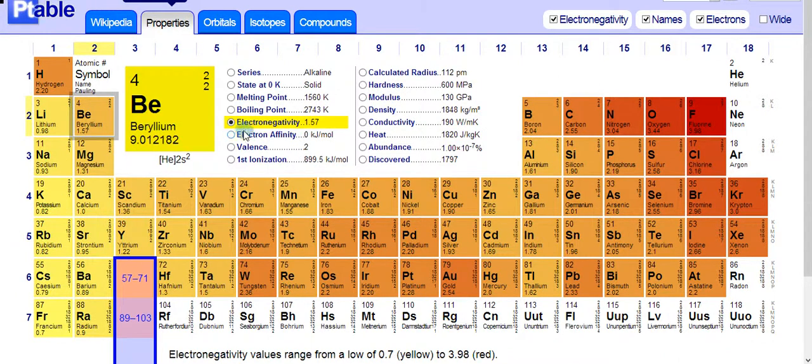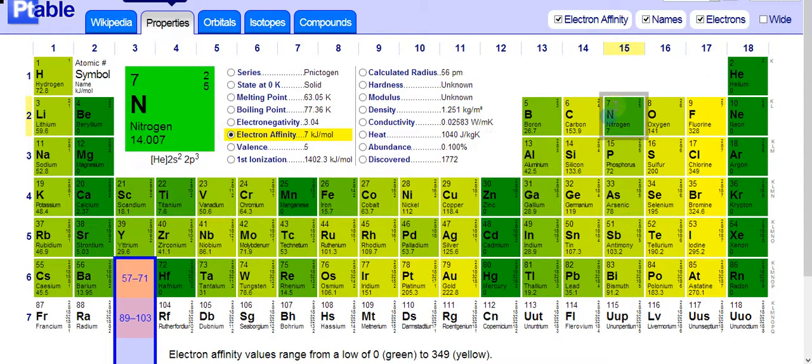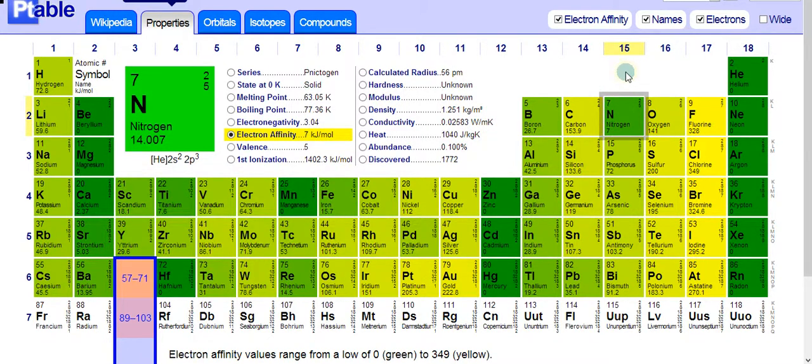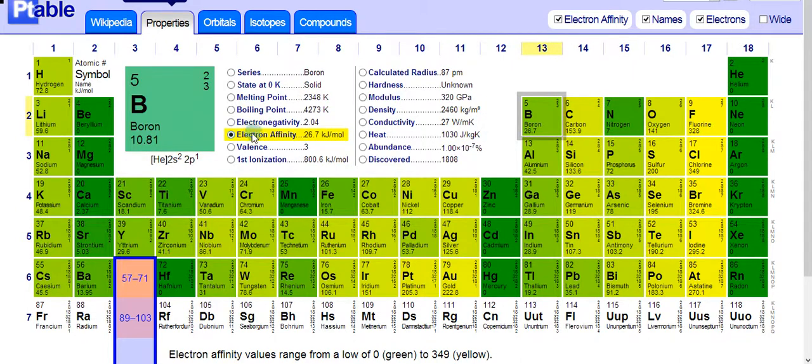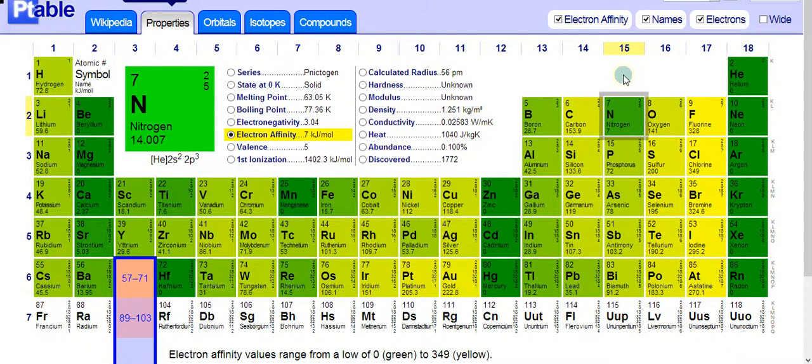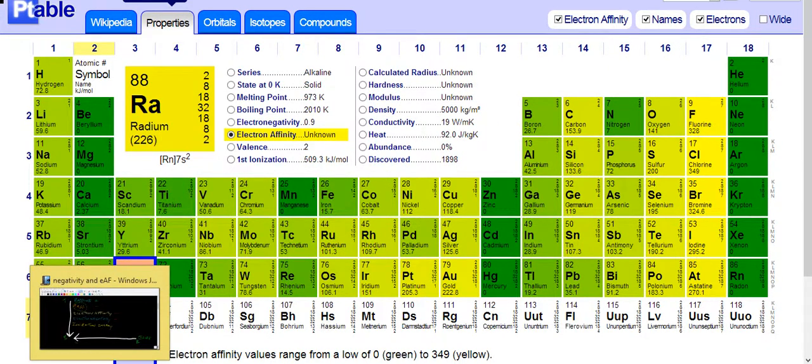And I believe that's... Oh, one more thing. I did want to point out one thing here. There's an exception right here to this rule. Here's the exception. Group 5A. Group 5A for electron affinity is an exception. And basically, there's some other exceptions and stuff like that, but I'll just point this one out real quick.